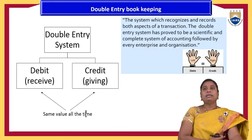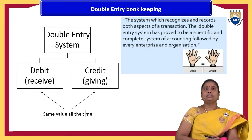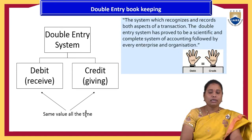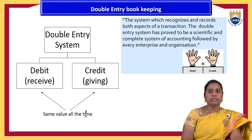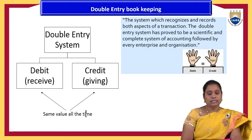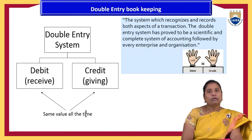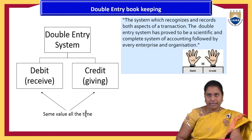The double entry system is mainly based on the credit and debit mechanism. The amount received by the organization and the amount spent by the organization should be equal on the debit and credit sides. That equality is the fundamental rule of the double entry mechanism.